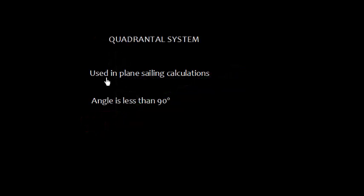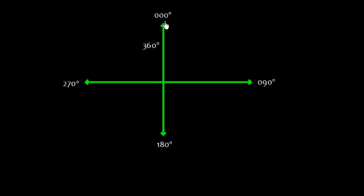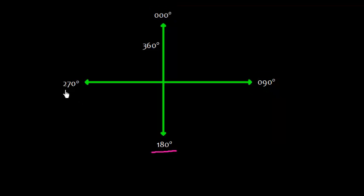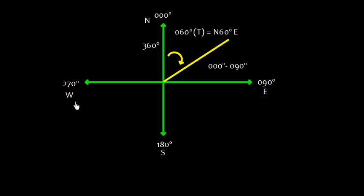Now let's talk about the quadrantal system, which is used in plain sailing calculations because the angle is less than 90 degrees. In this quadrantal system: 000° is north, 090° is east, 180° is south, and 270° is west, returning back to 360°.